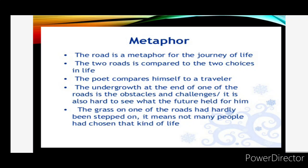Next we have metaphor. The road is a metaphor for the journey of life. The two roads are compared to the two choices in life, and the poet compares himself to a traveller. The undergrowth at the end of one of the roads represents the obstacles and challenges — it's also hard to see what the future held for him. The grass on one of the roads had hardly been stepped on, which means not many people had chosen that kind of life. So yes, the poet has used metaphor in his poem, The Road Not Taken.